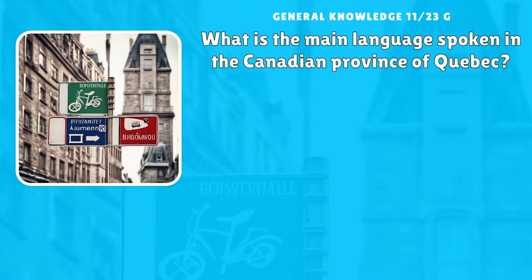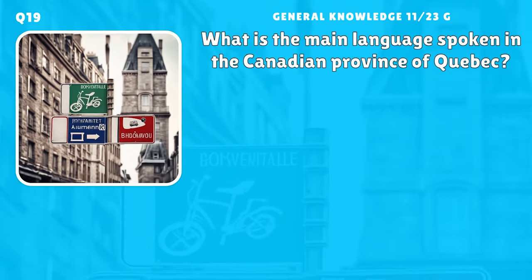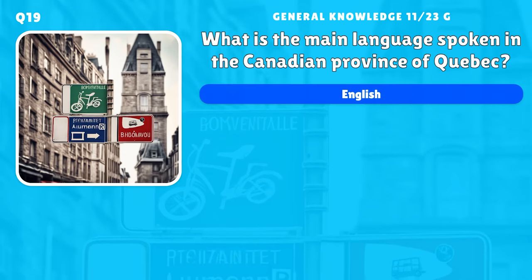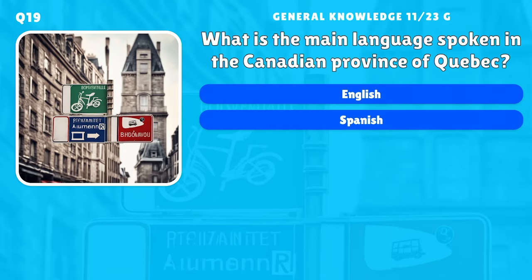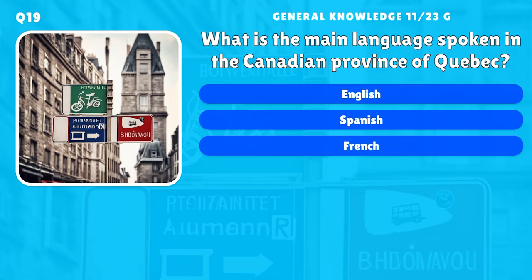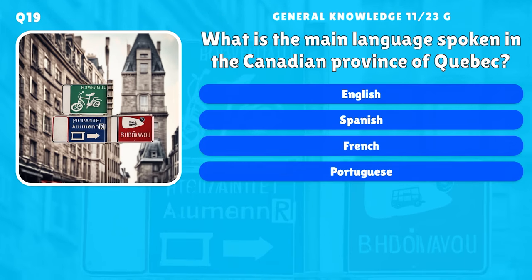What is the main language spoken in the Canadian province of Quebec? A) English, B) Spanish, C) French, D) Portuguese.